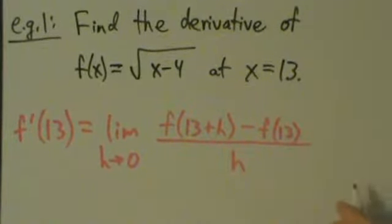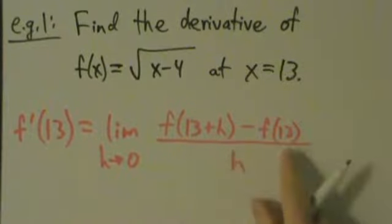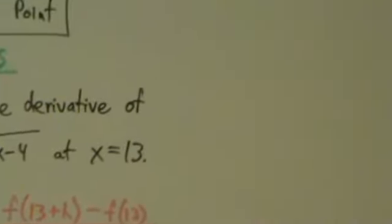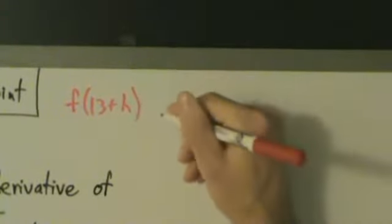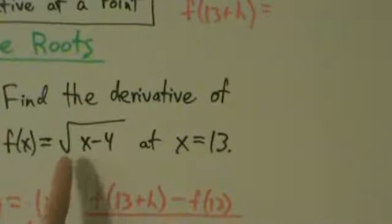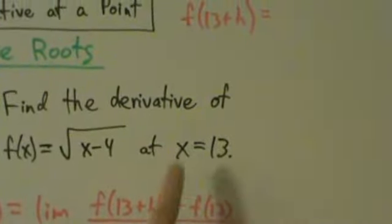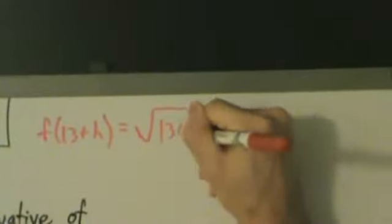Okay, so now we just got to figure out what's f of 13 plus h, what's f of 13, we'll go from there. So coming up here, f of 13 plus h is going to be what? Well, f of x is the square root of x minus 4, so f of 13 plus h is the square root of 13 plus h minus 4.